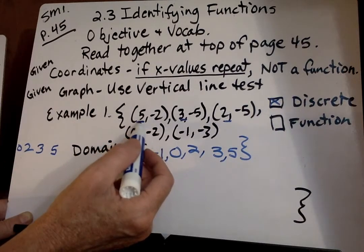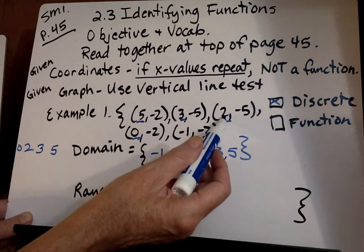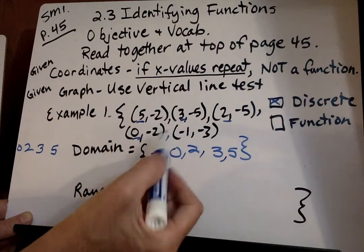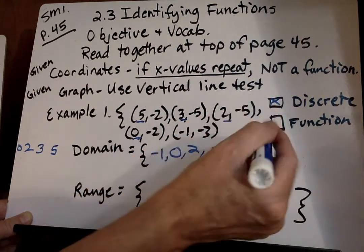Now is each one different? 5 is different from 3, 3 is different from 2, 0 and it's all different. So it's going to be a function.